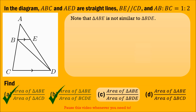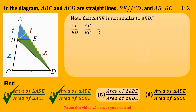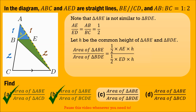To find the answer in part C, note that triangle ABE is not similar to triangle BDE. However, they do have a common baseline and hence a common height. Since triangle ABE is similar to triangle ACD, we have AE over ED equals AB over BC, which is 1 over 2. Letting H be the common height of triangles ABE and BDE, the area of triangle ABE over the area of triangle BDE simplifies to AE over ED, which equals 1 over 2.